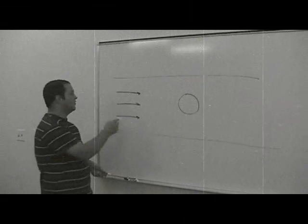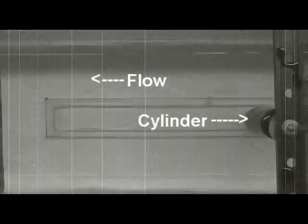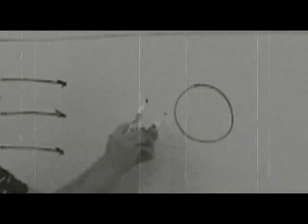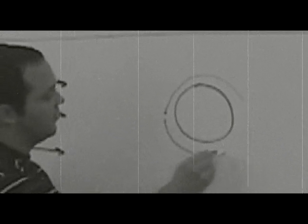Our experiment was set up in a flow channel, with a cylinder set up in cross-flow to the flow. Dye was injected here and here, using two different colors. One color of dye will go around the cylinder this way, as the other color goes around the cylinder this way.